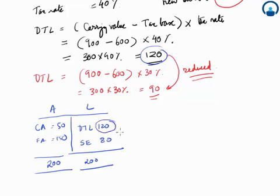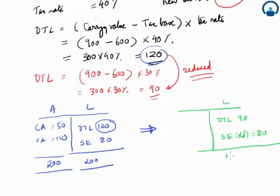We note that the deferred tax liability is sitting pretty here at 120. Now when there is a change in tax rates, what happens is that the liability position changes altogether. What we have is deferred tax liability will be 90 now. Shareholders equity, the old one, is basically 80.